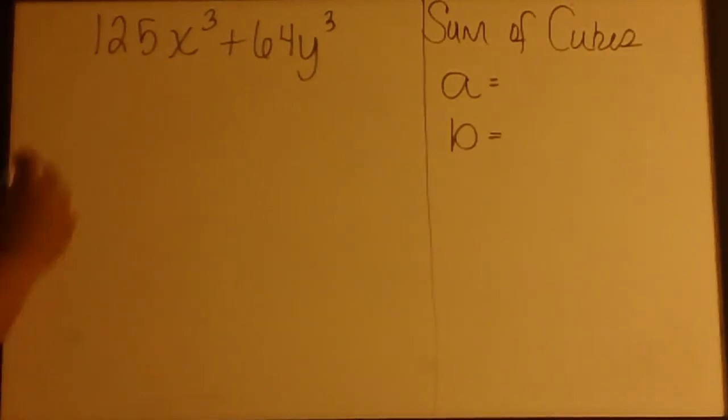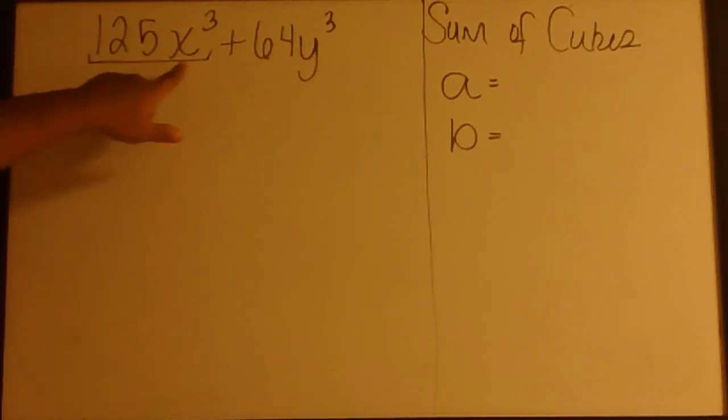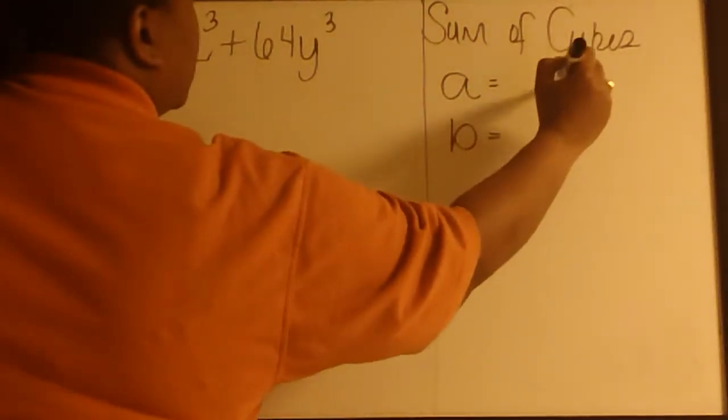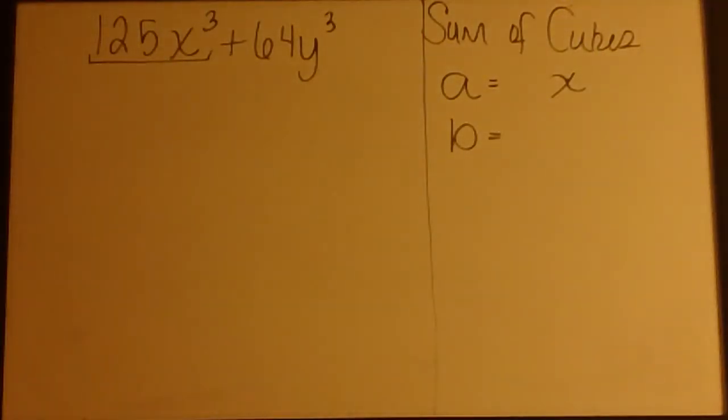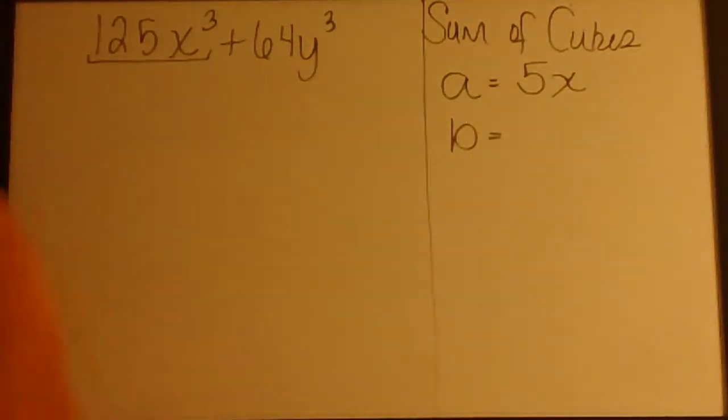Let's focus on A. We know that the cube root of X cubed is X. On your calculators, find out what the cube root of 125 is. You should find that it's 5, so our A is equal to 5X.